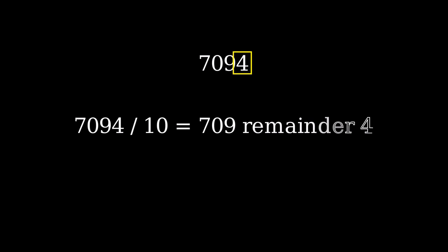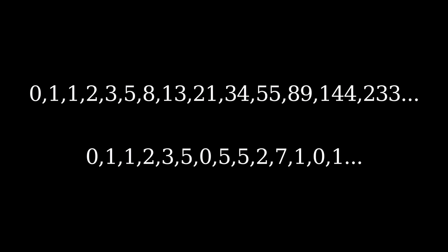Another mathy thing to note is that keeping just the last digit is the same as taking the remainder when you divide by 10, or in fancy math words, modulo, or mod 10. And there's nothing stopping us from doing this with a number that isn't 10. We could do the Fibonacci numbers mod 8, for example, taking the remainder of each number when we divide by 8.